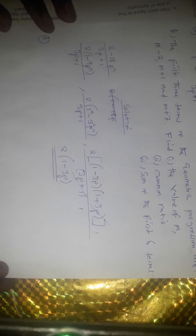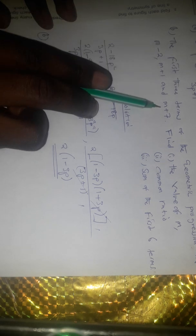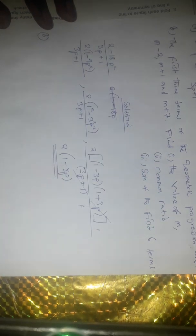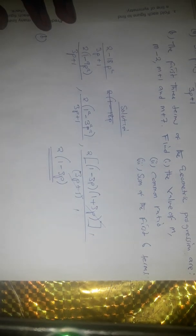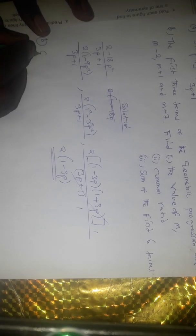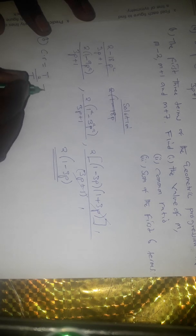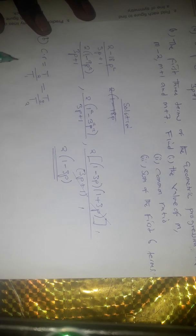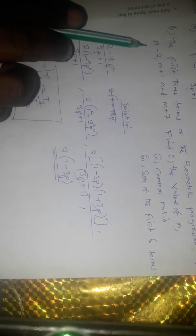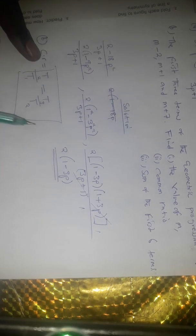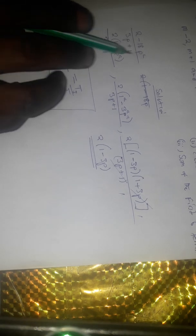Quickly going to Part B: the first three terms of a geometric progression are m minus 2, m plus 1, and m plus 7. Find the value of m. Because this is a geometric progression, we can use the concept of the common ratio. The common ratio equals the second term divided by the first term, which also equals the third term divided by the second term.